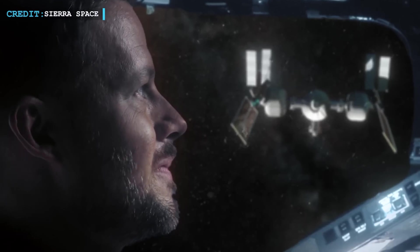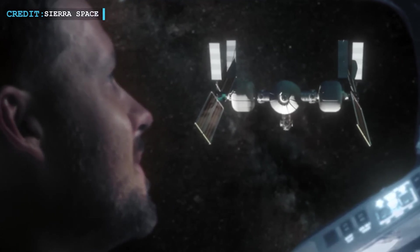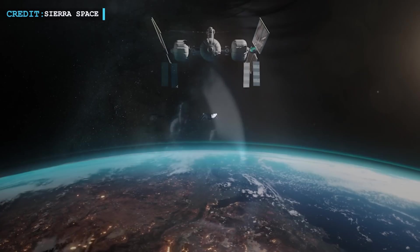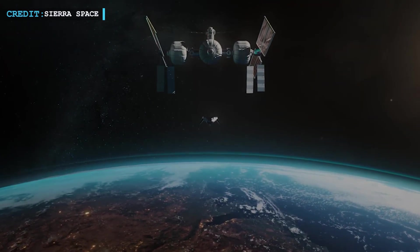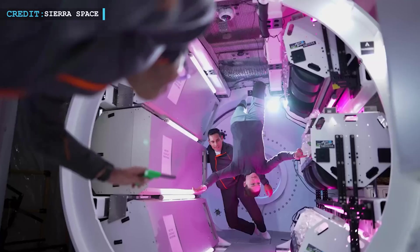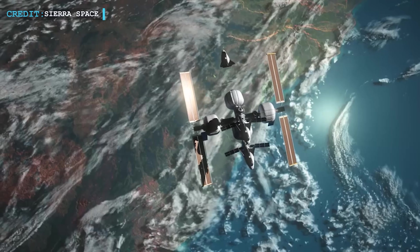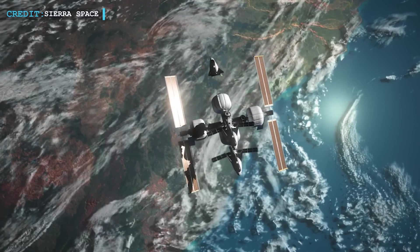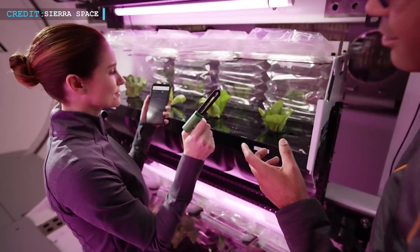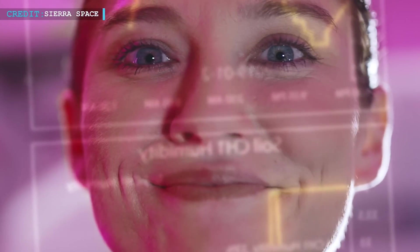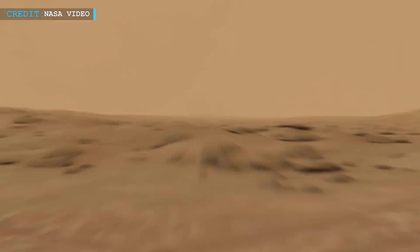Looking ahead, Sierra Space is exploring the possibilities of even larger inflatable modules, envisioning the use of future rockets like SpaceX's Starship. By leveraging the capabilities of these advanced rockets, they aim to double the working space and create jumbo-sized habitats with over 2,000 cubic meters in volume. This expansion paves the way for a more extensive and comfortable living environment, better accommodating the needs of long-term human presence on Mars.